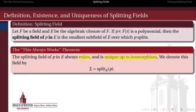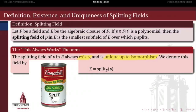Of course, there's a 'this always works' theorem associated with splitting fields: for any polynomial, its splitting field in E always exists, and that splitting field is unique up to isomorphism. In other words, the only difference between two splitting fields for a polynomial is just the basis that we take for E over F. We denote the splitting field with a capital sigma, or if we're being explicit, Spl_E(P).